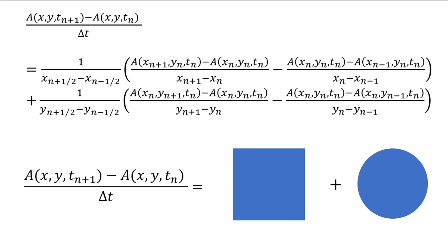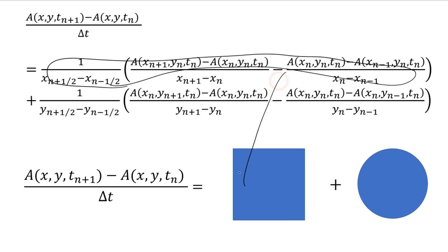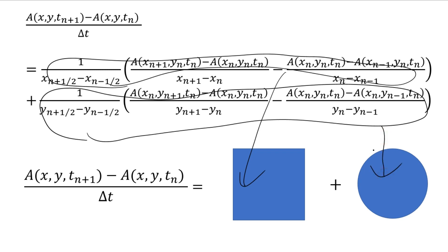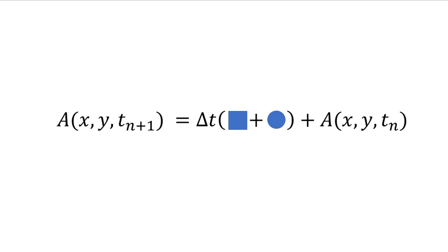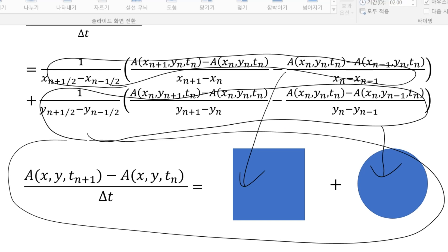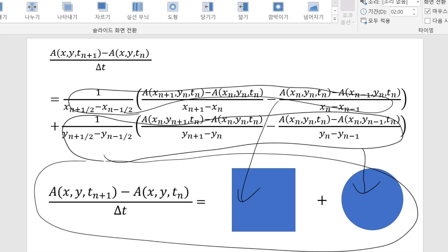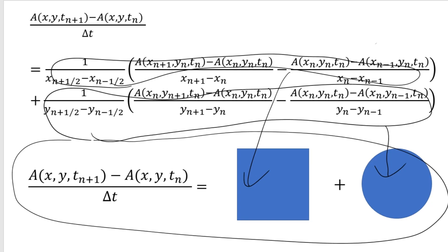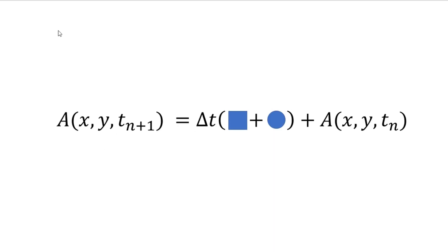Now I will explain the equation. Because the terms are quite complex, let me substitute the x terms with squares and the y terms with circles. The equation can then be expressed in this form. If I transpose some terms — delta t and A in time step n — the equation changes like this.